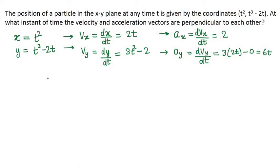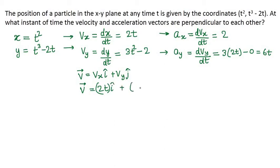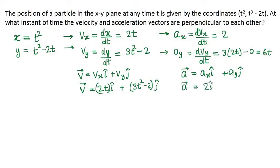Now, we have obtained the components. We can write down the velocity vector in terms of its components as vx î + vy ĵ. So the velocity vector v will be equal to 2t î + (3t² - 2) ĵ. Similarly, the acceleration vector can be written as ax î + ay ĵ, that means acceleration a is equal to 2î + 6t ĵ.